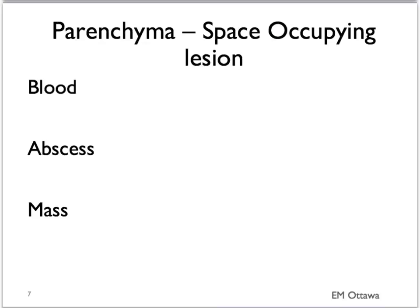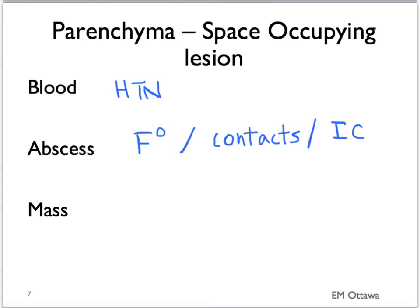In the brain parenchyma, we are most worried about space-occupying lesions, including blood, abscess, and mass. The blood here refers to parenchymal blood, not in the epidural, subdural, or subarachnoid space. For parenchymal blood, we need to know about history of hypertension, since that is the most common risk factor. For abscess, we need to know about constitutional symptoms including fever, sick contacts, travel history, and risk factors for immunocompromise. For mass, we need to know about history of cancer, headaches that are worse in the morning, and personality change.